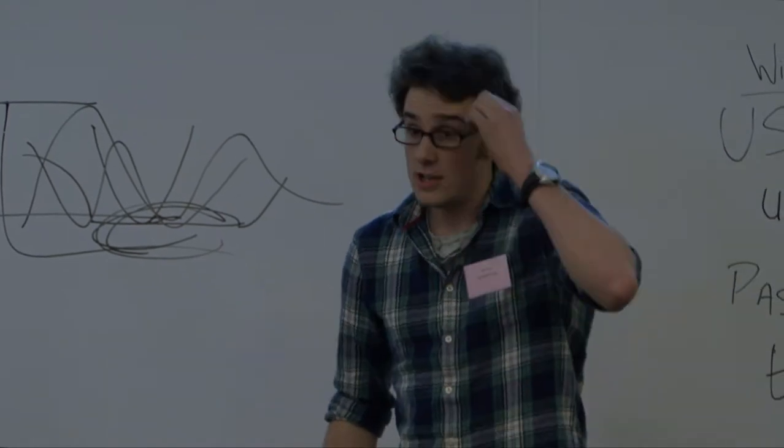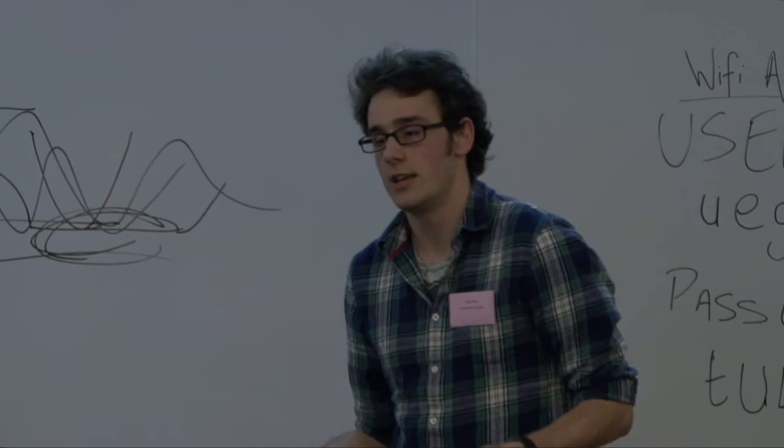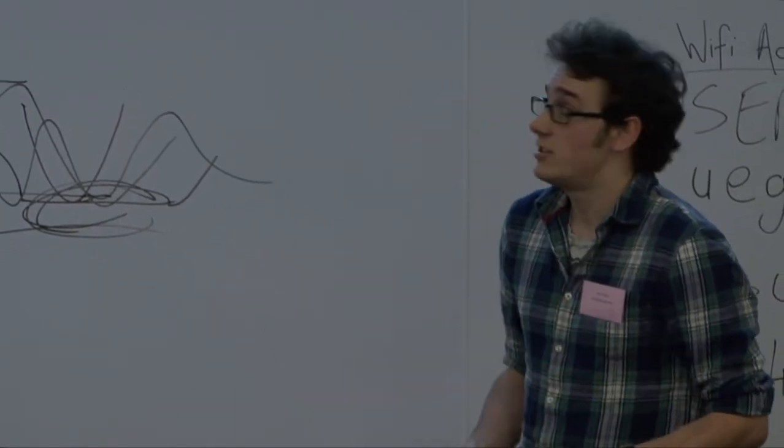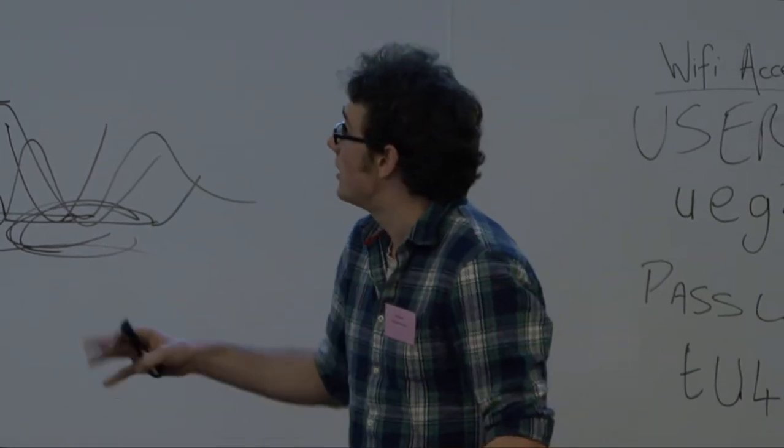Rhodosporidium toruloides is a red basidiomycete yeast, and it has two features making it really exciting for biodiesel production. It's oleaginous and can accumulate lipids up to 75% of its dry biomass.